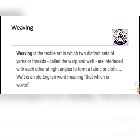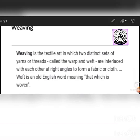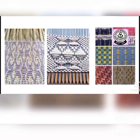The next is weaving. Weaving is the textile art in which two distinct sets of yarn or threads — called the warp and weft — are interlaced with each other at right angles to form a fabric. When we weave a cloth, that is weaving. Here you can see the weaving textile art.